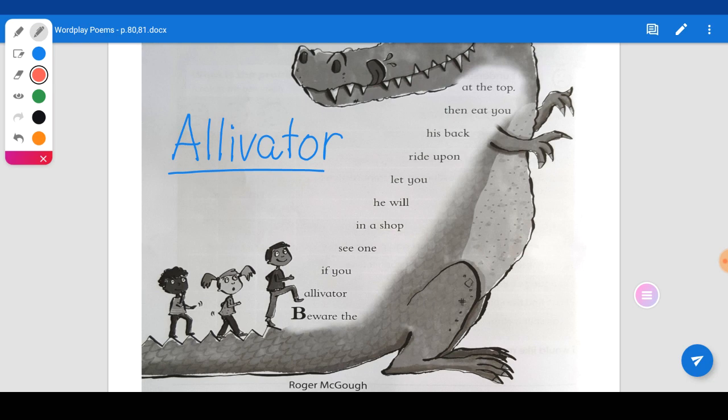So, beware the Ale-ve-tor if you see one in a shop. He will let you ride upon his back, then eat you at the top. So, where do we begin? We begin below.